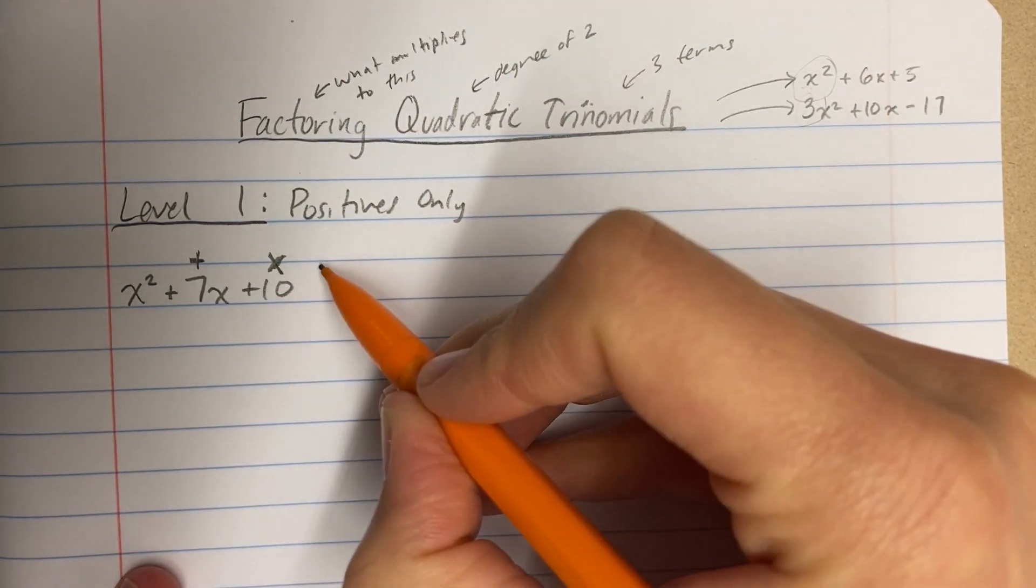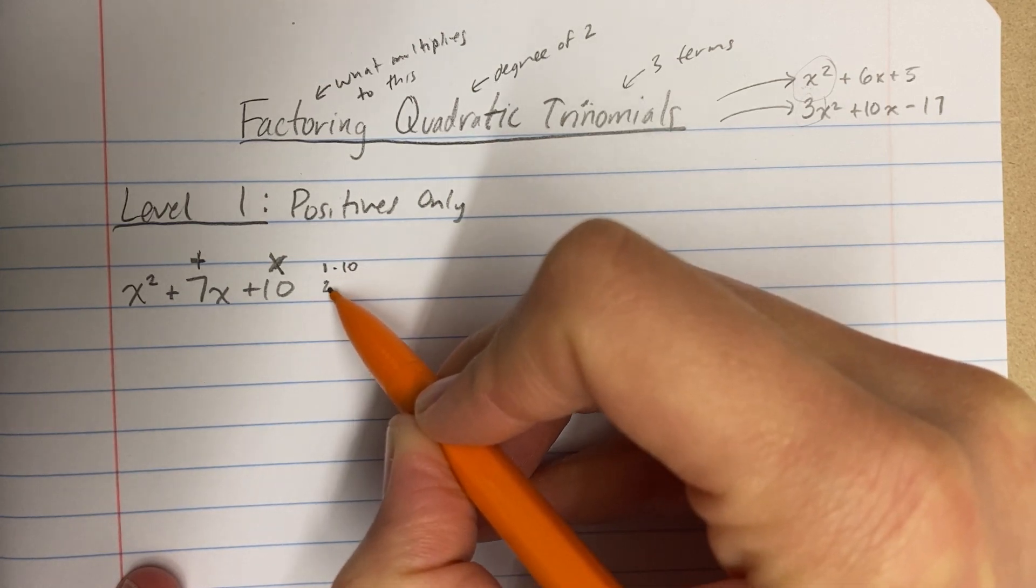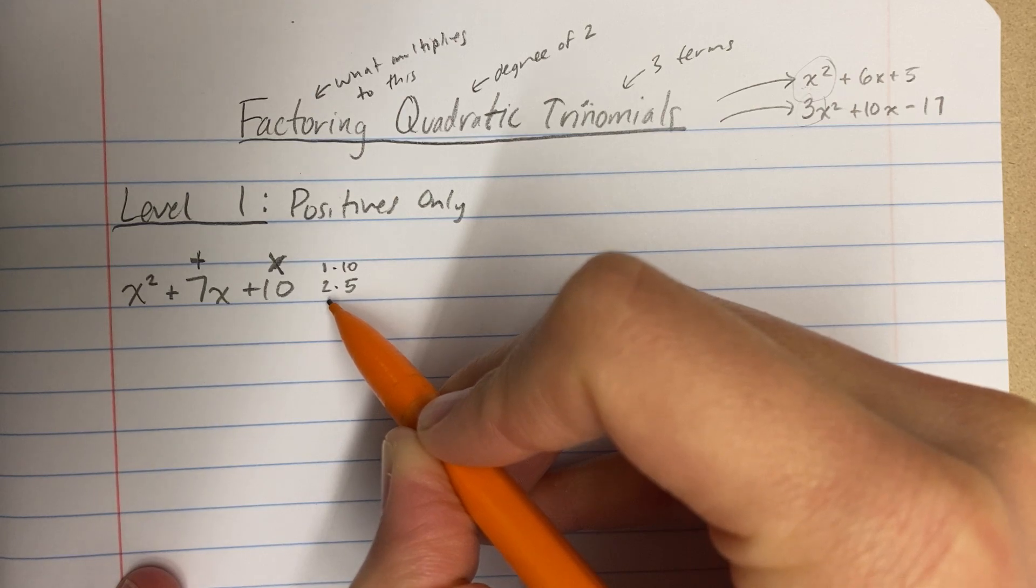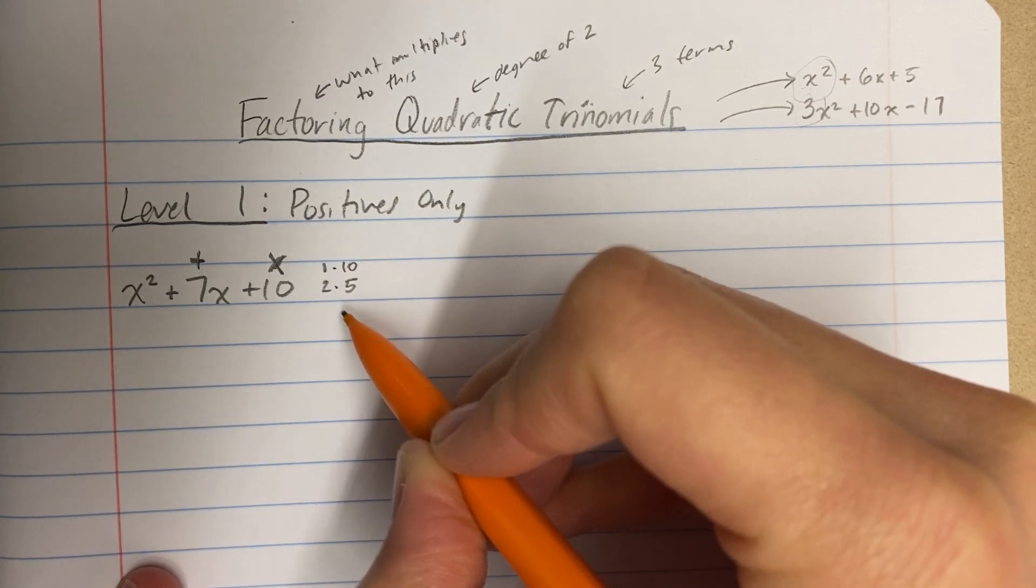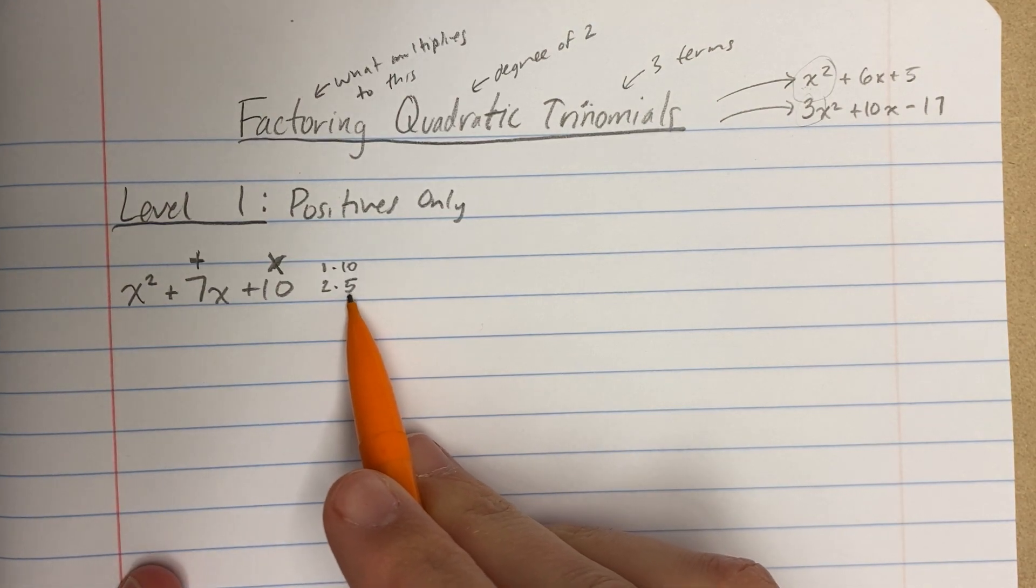If it doesn't, what you can do is just start at 1. We start at 1. 1 times what is 10? 10. 2 times what is 10? 2 times 5. Does 3 multiply to 10? No. Does 4 multiply to 10? No. Does 5 multiply to 10? Oh, already done. Once you get to a number you've already seen, then you're set.